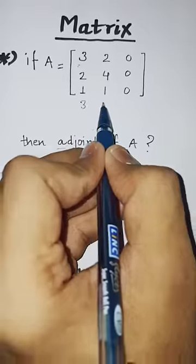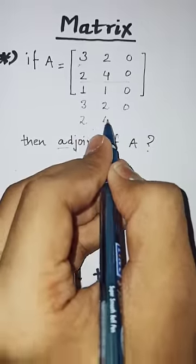First row, you will write 3, 2, 0. Second row, you will write 2, 4, 1. After doing that,